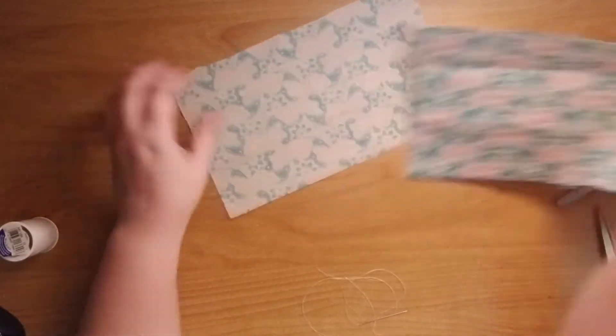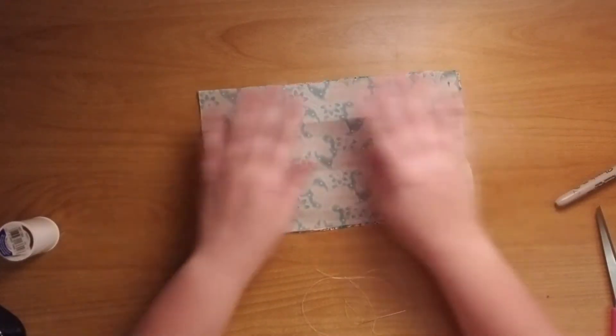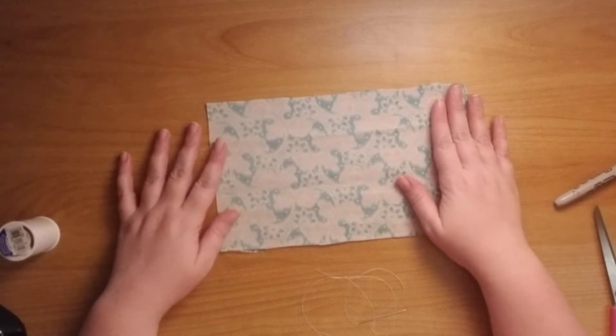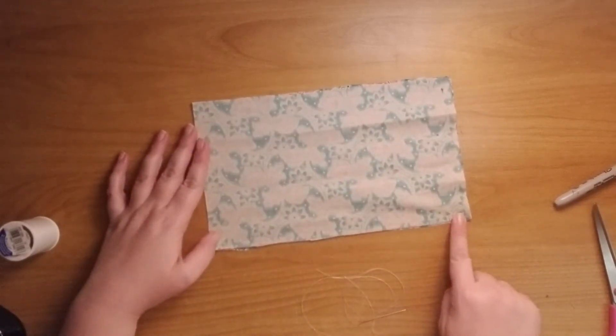So you're going to take your two pieces of fabric and you're going to put the pretty sides on the inside. So the wrong sides are out. I'm going to just go down and I'm going to sew down both sides of the long side of my mask.